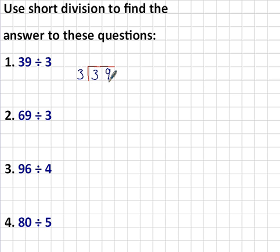First of all, I look at how many times 3 goes into 3, and of course 3 divided by 3 is 1. So I put the 1 up there. Then I have to look at how many times 3 goes into 9. 3 goes into 9 three times. So I put the 3 up there. So the final answer to 39 divided by 3 is 13.